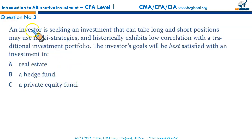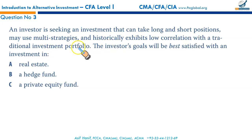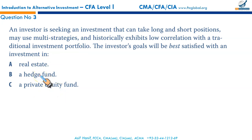Question number three. An investor is seeking an investment that can take long and short positions, may use multi-strategies, and historically exhibits low correlation with the traditional investment portfolio. The investor's goals will be best satisfied with an investment in hedge funds. Hedge funds use a variety of strategies, their returns are less correlated with traditional investments, and they can take long and short positions. That makes B the correct option.